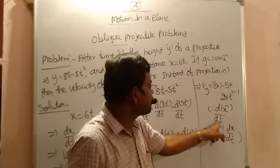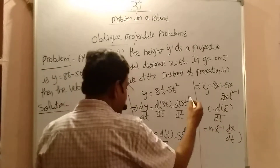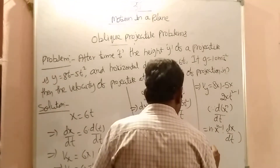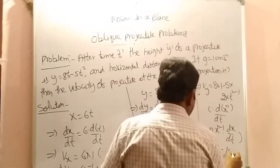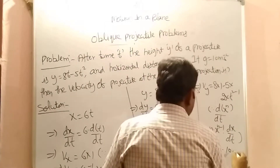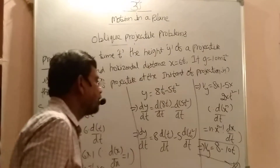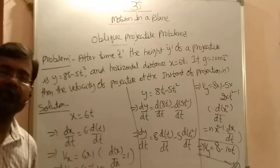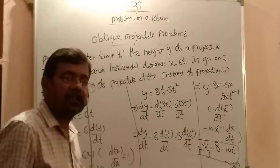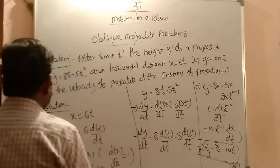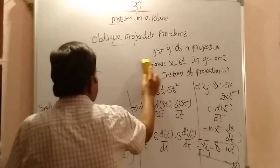Using the power rule: differentiation of xⁿ equals n × x^(n-1). Differentiation of t² with respect to t equals 2t. So vy = 8 - 10t. Initial velocity means at time t = 0. If t = 0, that represents the initial velocity.